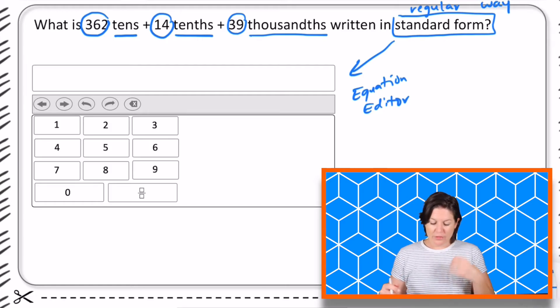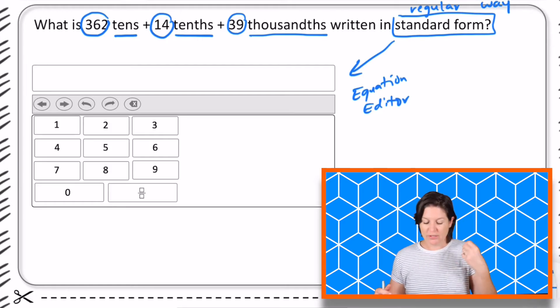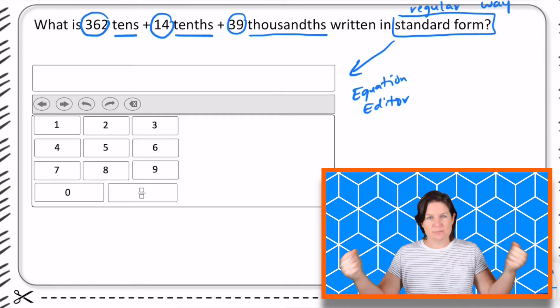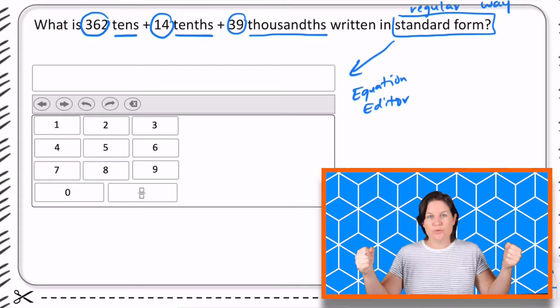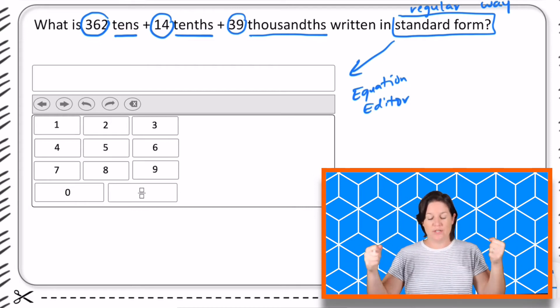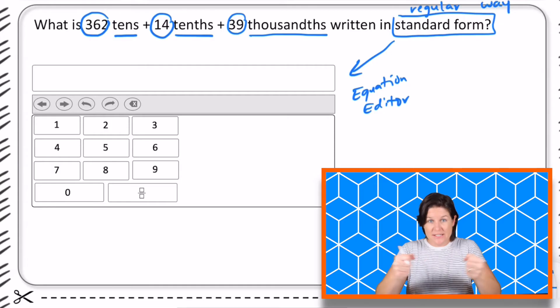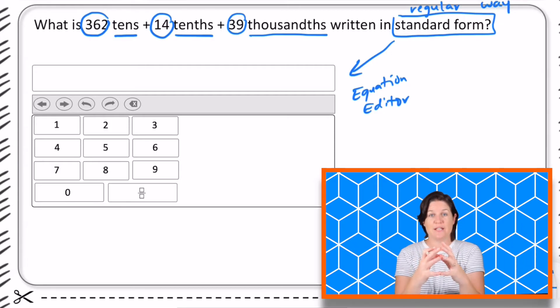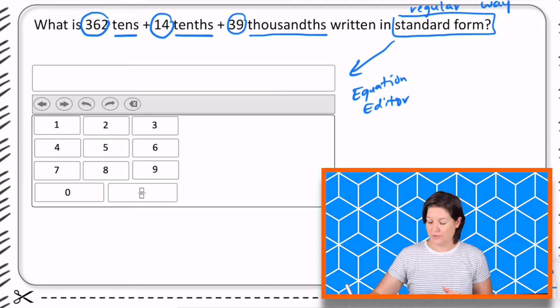What we have here with 362 tens plus 14 tenths plus 39 thousandths, that's kind of a form of expanded form. We have decomposed the standard form of this number into this value. Since it's been decomposed or expanded what we're going to do is compose it back together and get it into standard form.